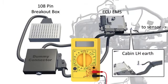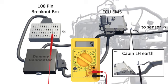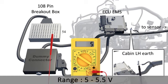Set the multimeter to DC voltage mode. Pin 3 connected to EMS pin 54 must have supply voltage in the range of 5 to 5.5 volts.